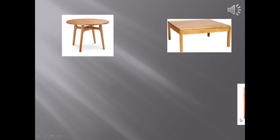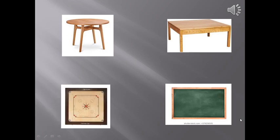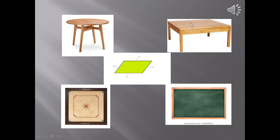Identify the objects given in front of you. You can see a table, a stool, a blackboard and a carom board in front of you. All these have a flat surface. In geometry such flat surfaces are called as a plane.